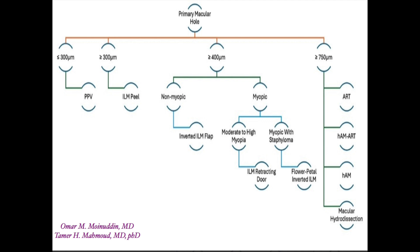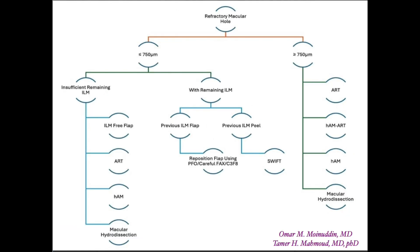For very large macular holes greater than 750 microns, one of four techniques is used: autologous retinal transplant, human amniotic membrane transplant, PFCL-assisted surgery, or macular hole hydro-dissection. For refractory macular holes, there is a separate algorithm also described by Dr. Tamir and Dr. Omar.